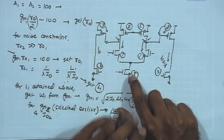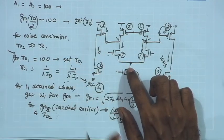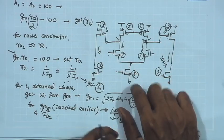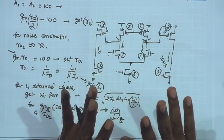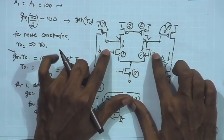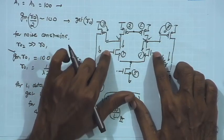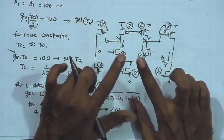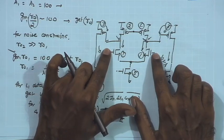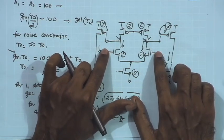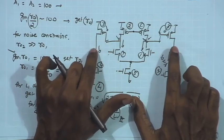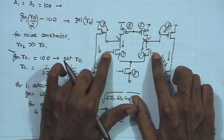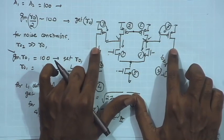We were discussing the W/L requirement of M5. The condition that must be satisfied is that we should have sufficient headroom for M5 so that it remains in saturation under all conditions. Looking at the circuit configuration, the gate potential of this amplifier is set with the help of resistive feedback. We implement a very high value resistance using subthreshold region transistors and establish a DC bias equal to VDD/2.